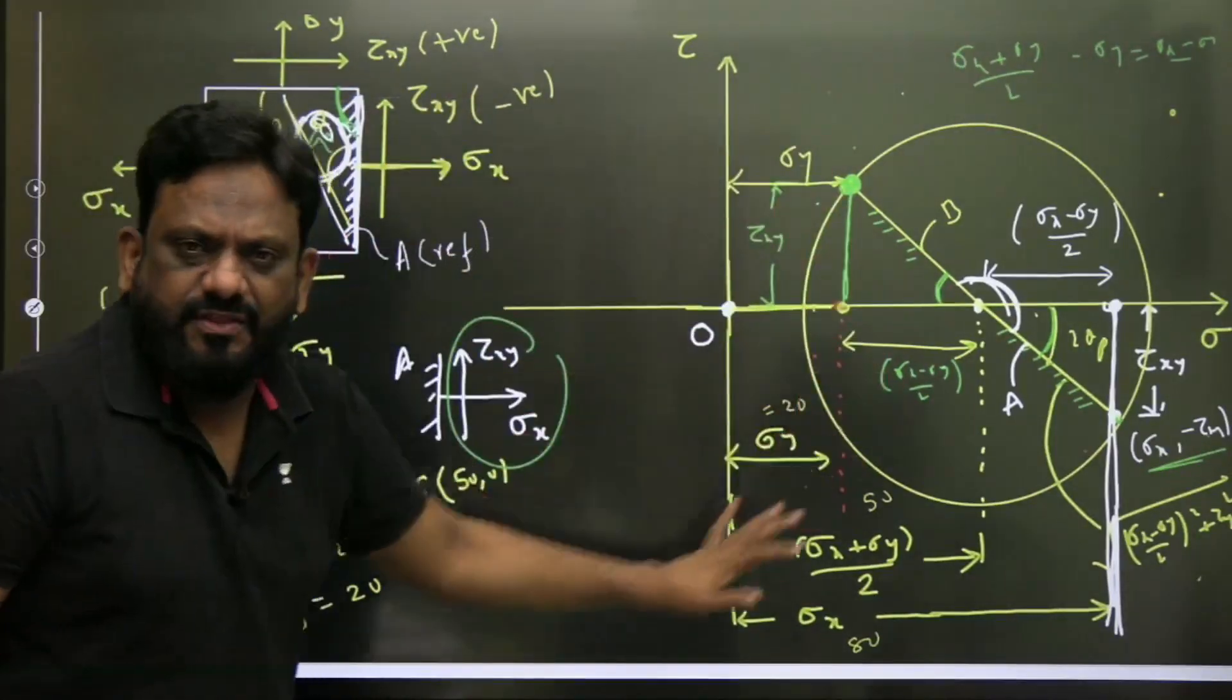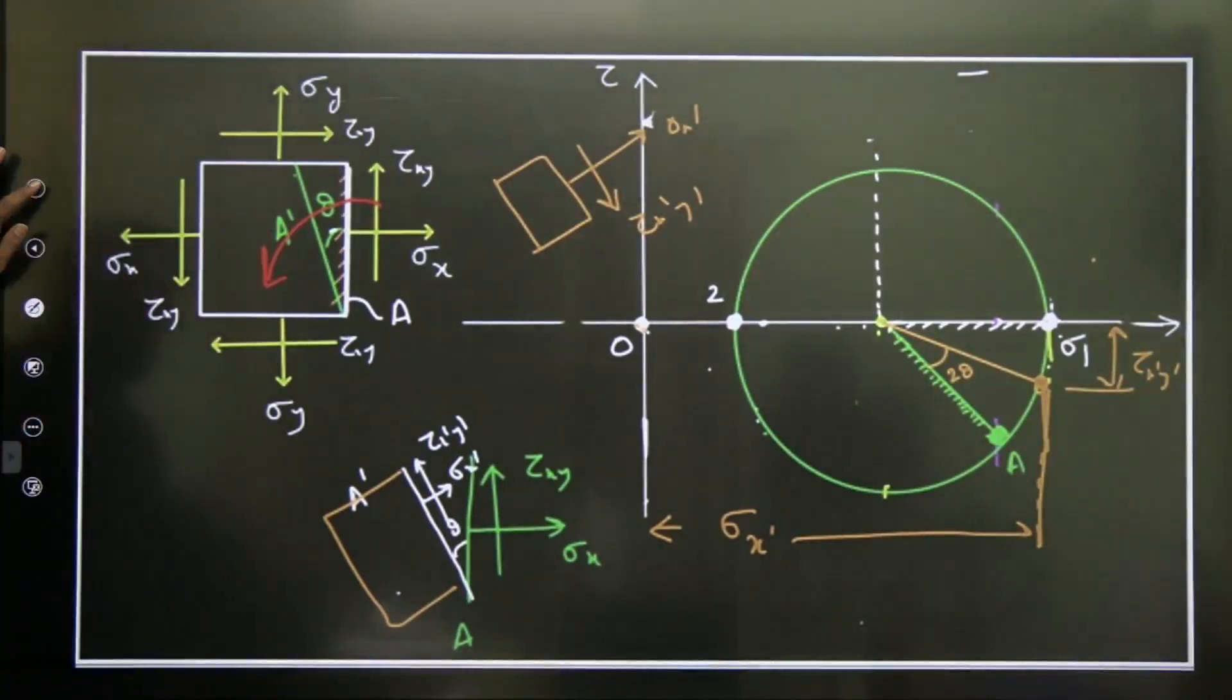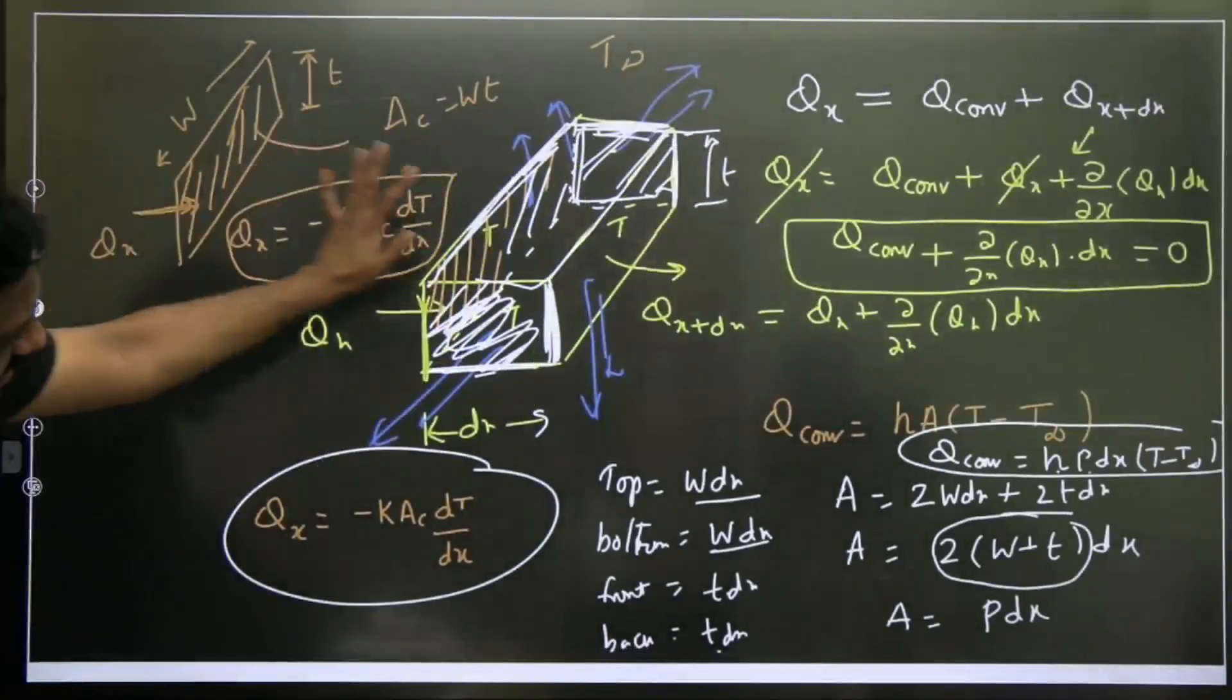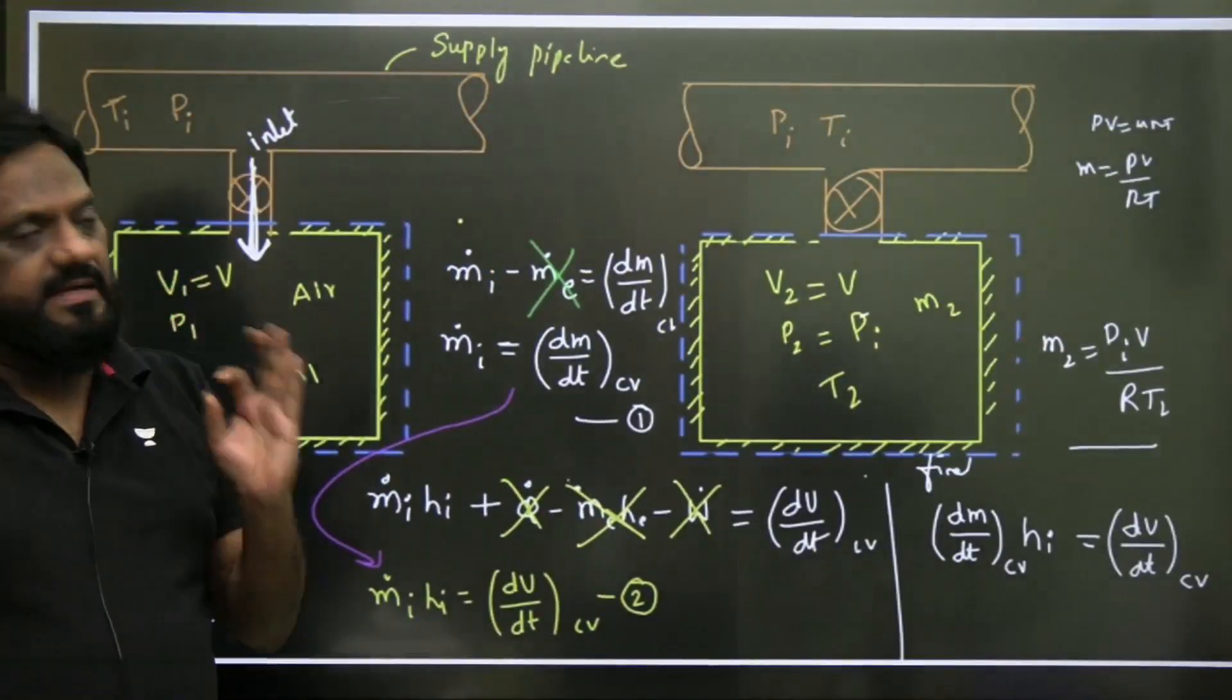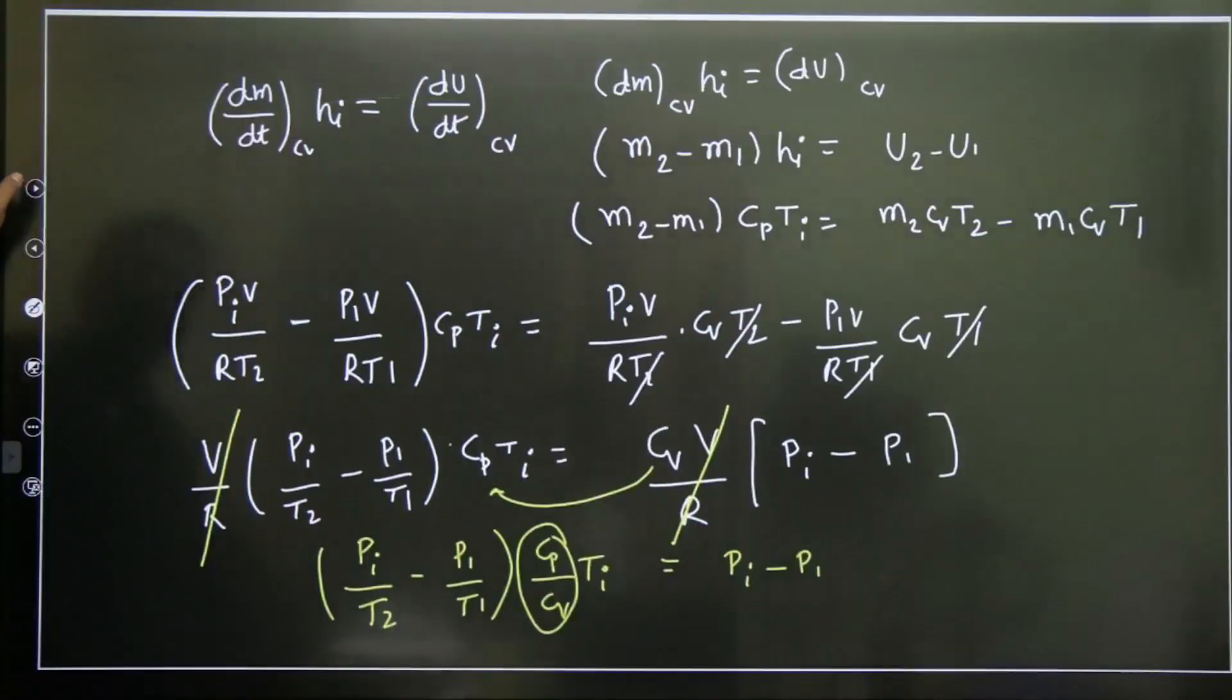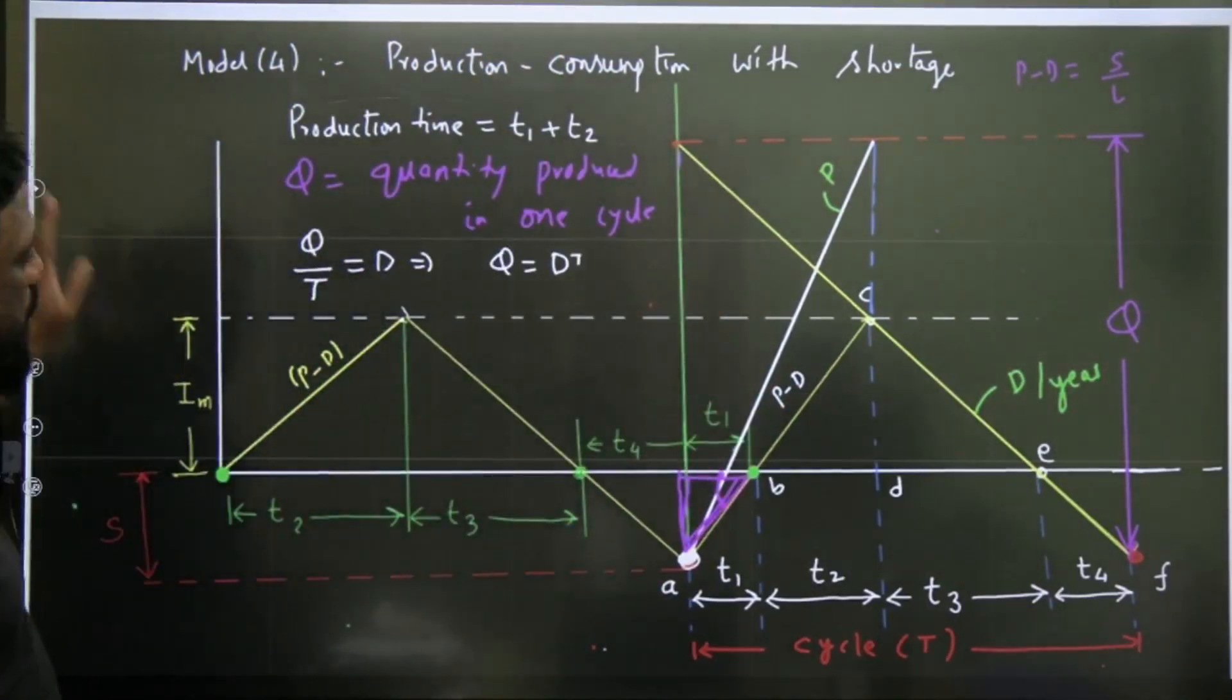This is taken from my Strength of Materials, that is Mohr's Circle, same Strength of Materials Mohr's Circle. Then this is from heat transfer fins, same heat transfer fins, complete derivation. Everywhere I derived equations very neatly. This is from thermodynamics, unsteady state flow and again the derivation, unsteady state flow.